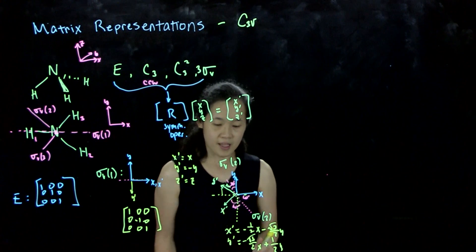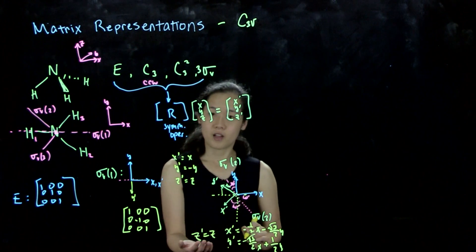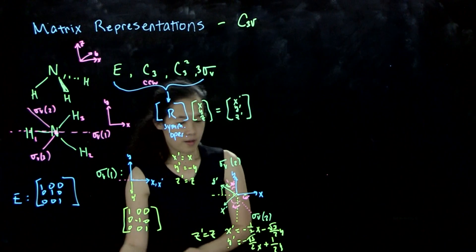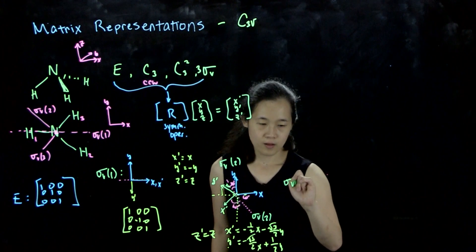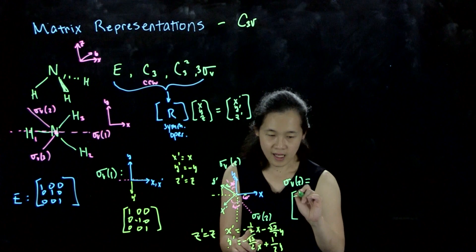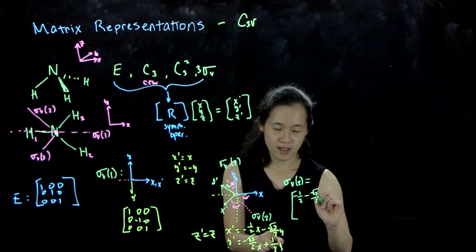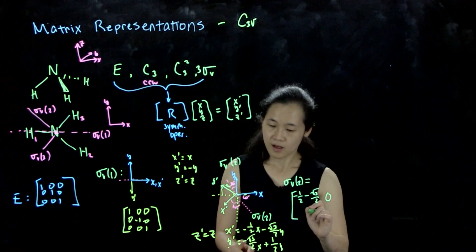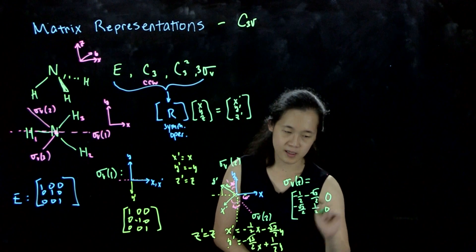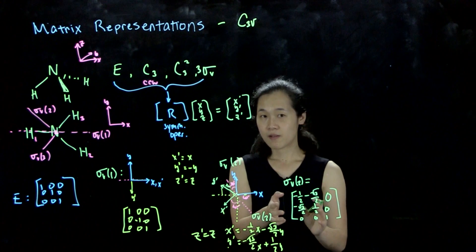We're using the unit circle and figuring out what directions these vectors are pointing. And we know that z prime is going to be equal to z because that mirror plane contains the z axis. So what this means is that overall our matrix is going to be sigma v2 equals negative one-half, negative root 3 over 2, zero. y prime is negative root 3 over 2 x plus one-half y, zero z. And z is just zero x plus zero y, one z. So this is our sigma v2.